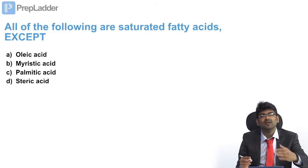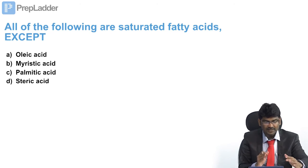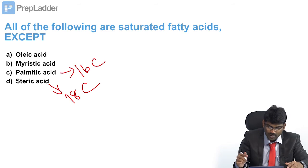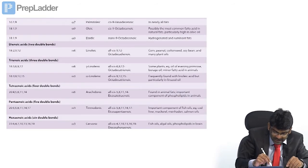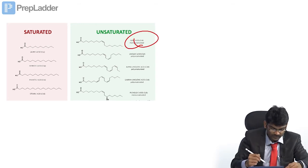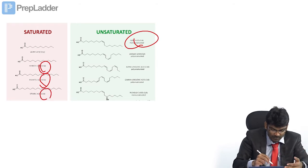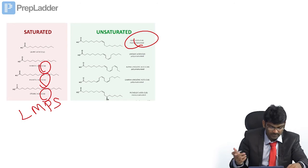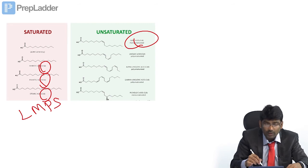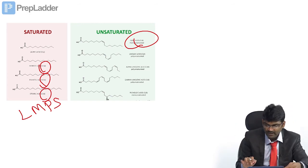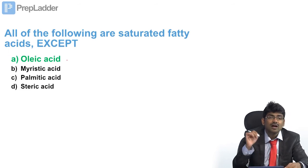All of the following are saturated fatty acids — meaning fatty acids without a double bond. Palmitic acid has 16 carbons with no double bond; stearic acid has 18 carbons with no double bond. Oleic acid contains a double bond — it is an unsaturated fatty acid. Saturated fatty acids in alphabetical order: lauric (12C), myristic (14C), palmitic (16C), stearic (18C). Unsaturated fatty acids include oleic, linoleic, alpha-linolenic, gamma-linolenic, arachidonic, EPA, and DHA. The answer is oleic acid, which is unsaturated.